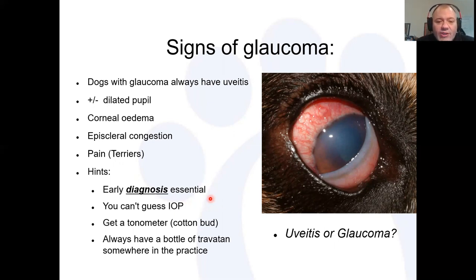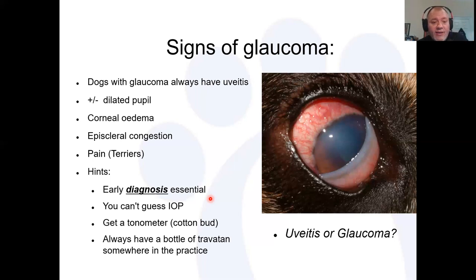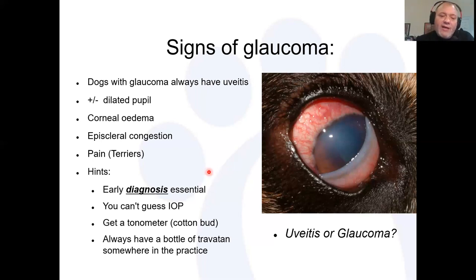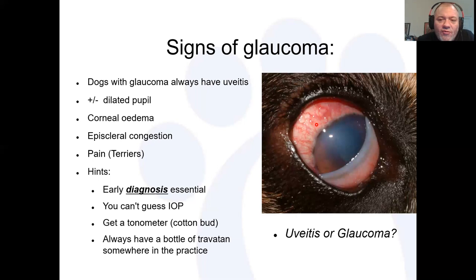Early diagnosis is essential. If you haven't got access to tonometry, know where your nearest tonometer is — a local practice, another branch, or your local ophthalmologist. You can't guess intraocular pressure just by looking at the eye. You can palpate through a closed lid to appreciate a very hard globe, but the pressure must be very high before you can feel it. Alternatively, a cotton bud gently touching the eye at the limbus — on the scleral side, not the corneal side — to gently indent the globe can be useful: a soft uvitic globe will readily indent, whereas a hard globe will not. Comparing both eyes is a useful screening test.